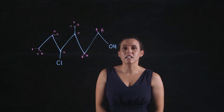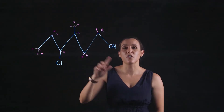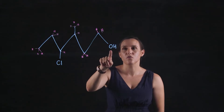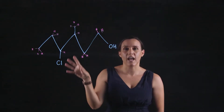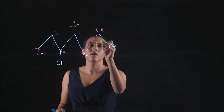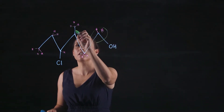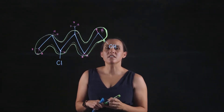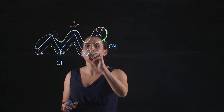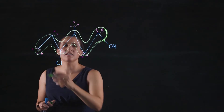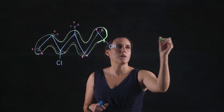Let's get into naming this line diagram. The first thing we do with naming is we circle the longest continuing chain of carbon atoms, and we want to keep the functional group on that main chain. The longest continuing chain of carbons would be this one here, and it has one, two, three, four, five, six carbons in that chain.